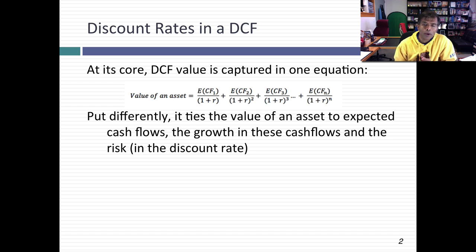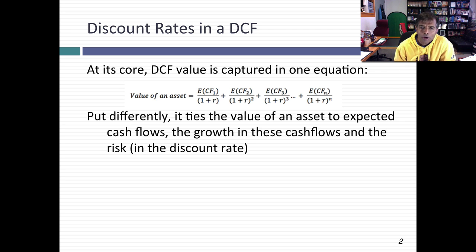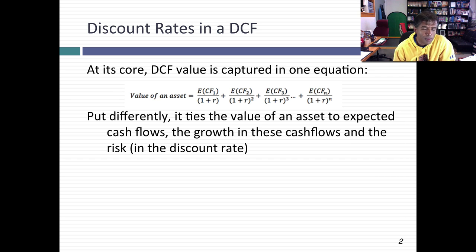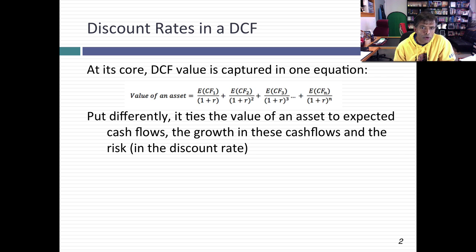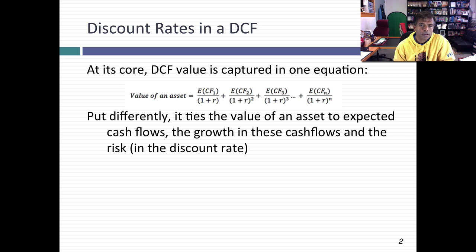In discounted cash flow valuation, we argue that the value of an asset is the present value of the expected cash flows in the asset. Nothing more, nothing less. So in the numerator, you've got your expected cash flows across all possible scenarios. And in your denominator, you've got the discount rate reflecting the risk in those cash flows.